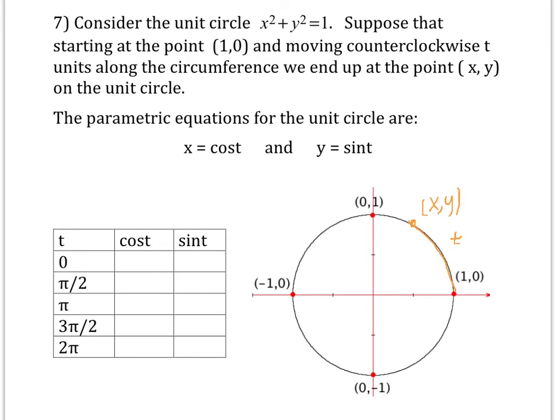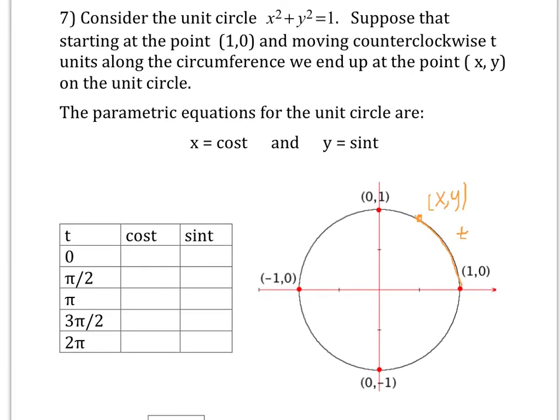Suppose we start at 1, 0. We always start at 1, 0. And we go a distance of π over 2. From here to here is π over 2. So the question is, what would be the x coordinate of this point? Well, the x coordinate is zero. That's the cosine. The y coordinate is 1. That's the sine of π over 2. We actually say cosine of π over 2 equals zero. That's the x coordinate. See how it works?